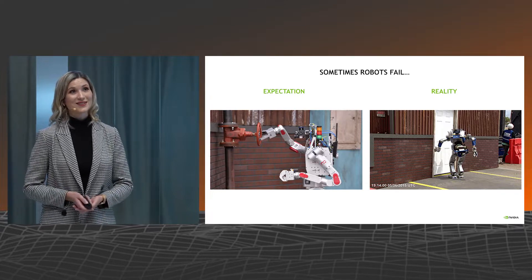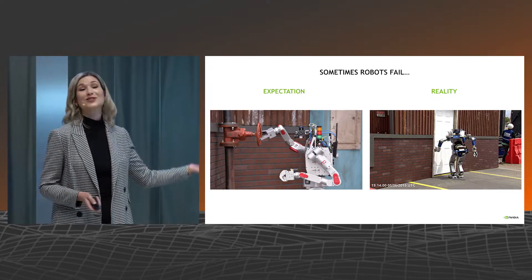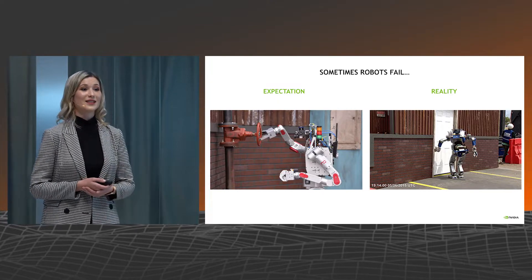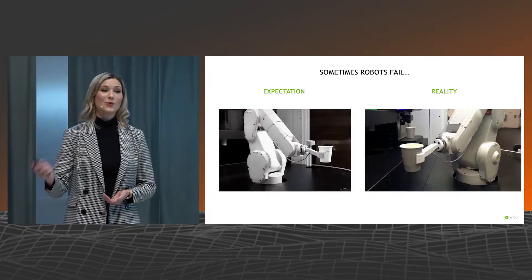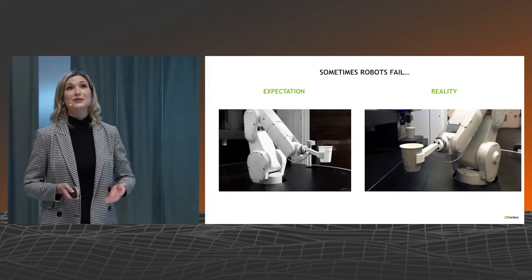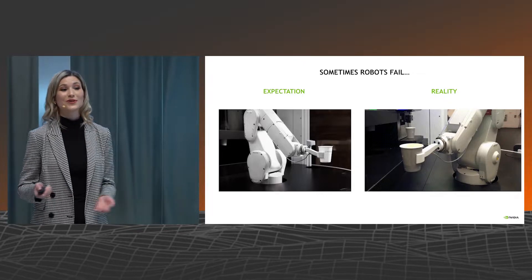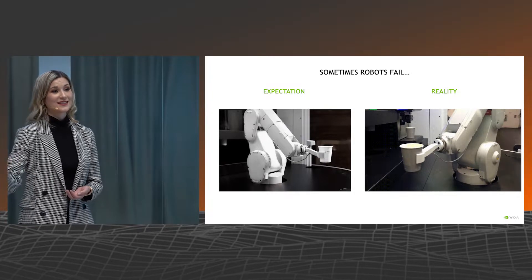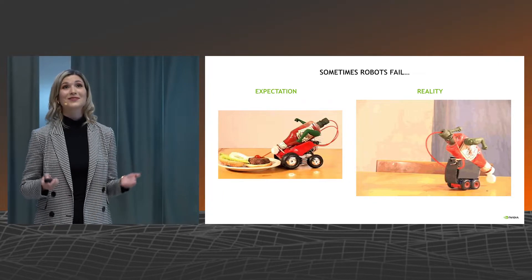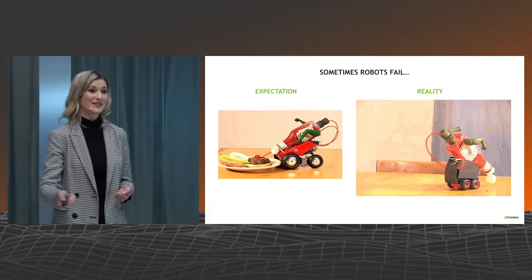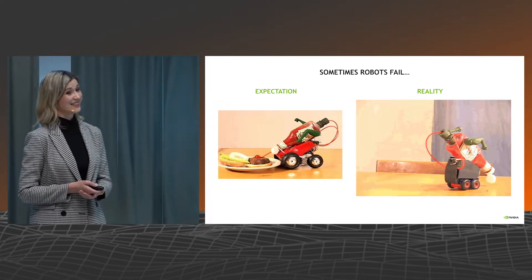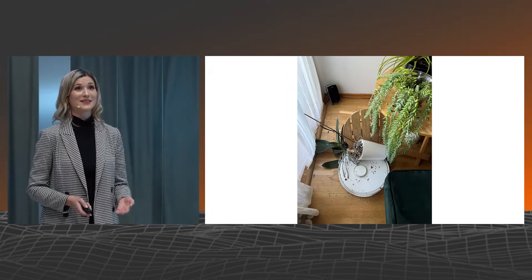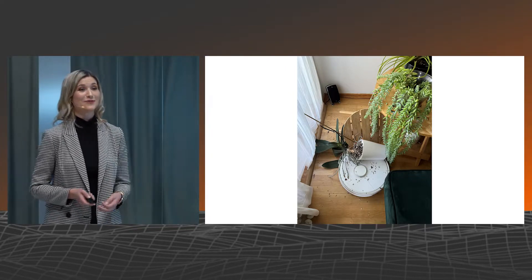But sometimes robots fail. Imagine you have a rescue robot and you want this robot to come and help you solve some problems — but then things like that happen. Or you have a robot which is supposed to serve you a cup of freshly brewed coffee, but then things like that happen. A robot to serve you ketchup — what can possibly go wrong? And this one is especially painful for me because it's my own vacuum cleaning robot. Happened a couple of weeks ago. Really painful when they fail.